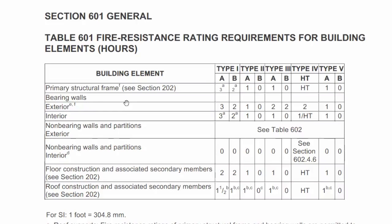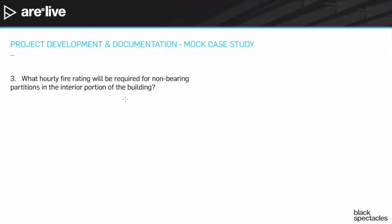We have bearing walls — exterior and interior versions. We have non-bearing walls and partitions at the exterior. The one that we actually got asked about though was non-bearing walls and partitions in the interior. And I was worried — there's type 1, type 2, type 3 — what are we going to do if we don't know which type it is? Look at that. They're all 0. So the answer is 0.